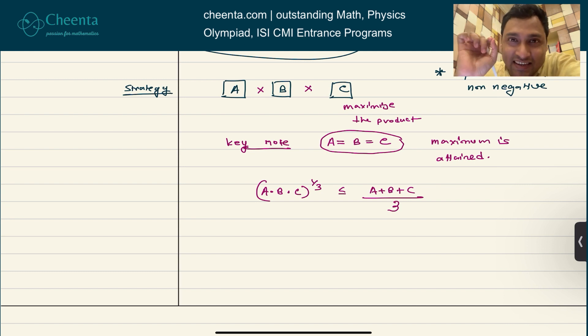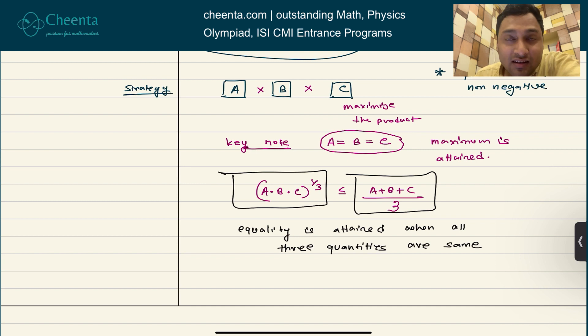But there is an additional line to the statement of the AM-GM inequality that sometimes people miss but you should not miss it at all. It says that equality is attained when all three quantities are same. So both of these things are equal when A is equal to B is equal to C.